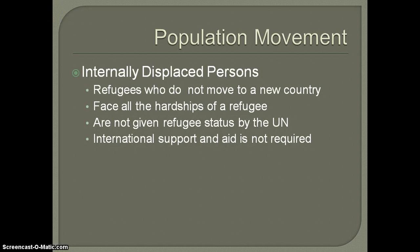Internally displaced persons are essentially refugees in everything but name — they face all the hardships of a refugee and are typically undergoing the same sort of persecution. However, they're not given refugee status by the United Nations. The problem is that internally displaced persons are supposed to be dealt with by their internal government, but more than likely that internal government is the one doing the persecution of the IDP, creating a serious conflict. International support and aid is not required for IDPs.